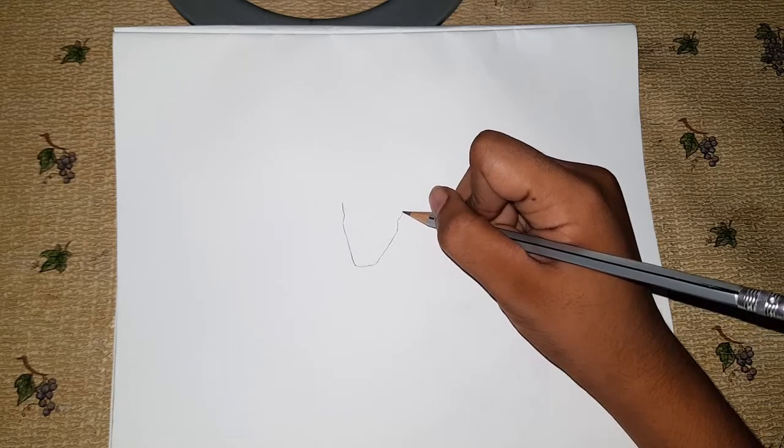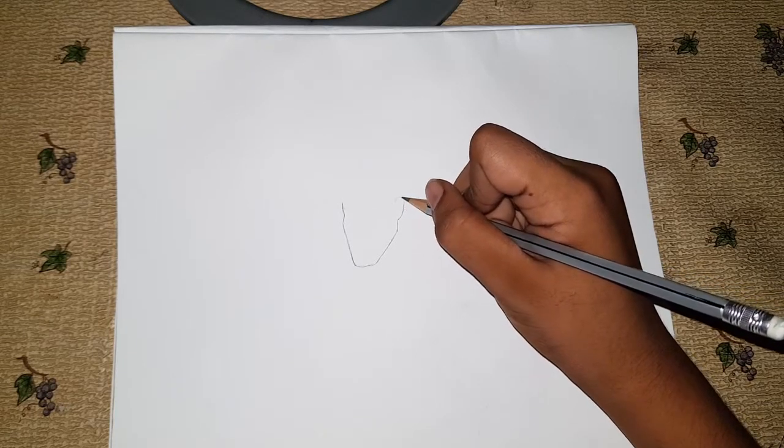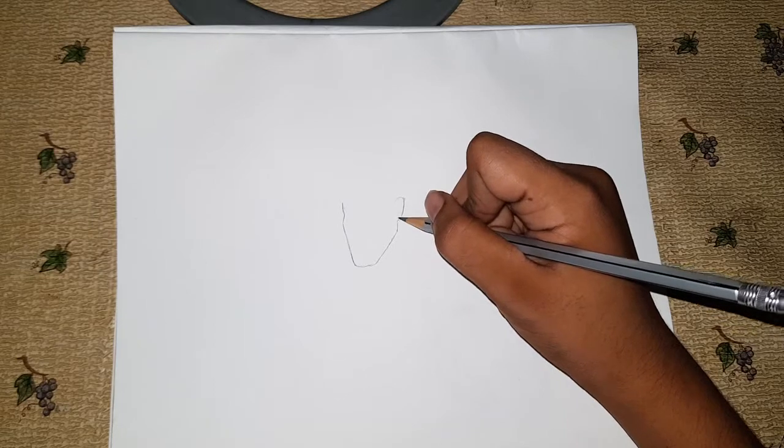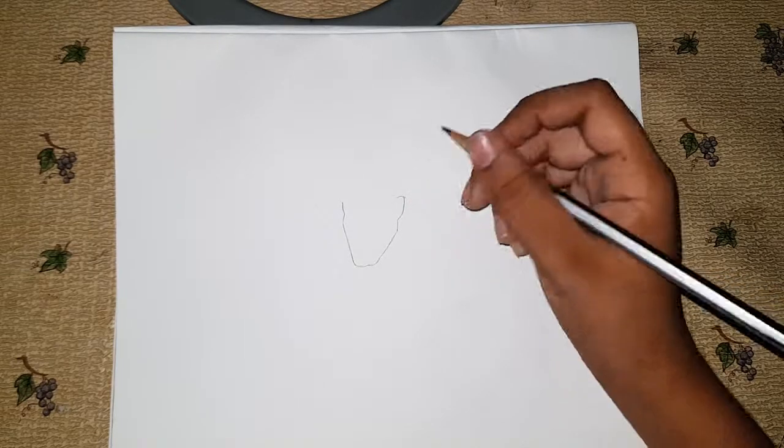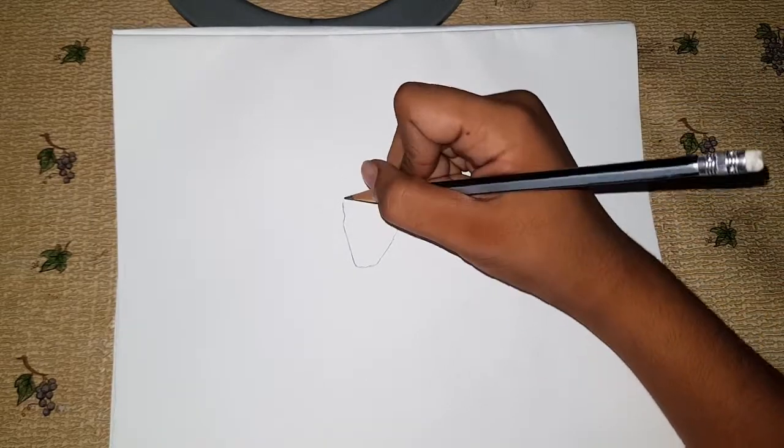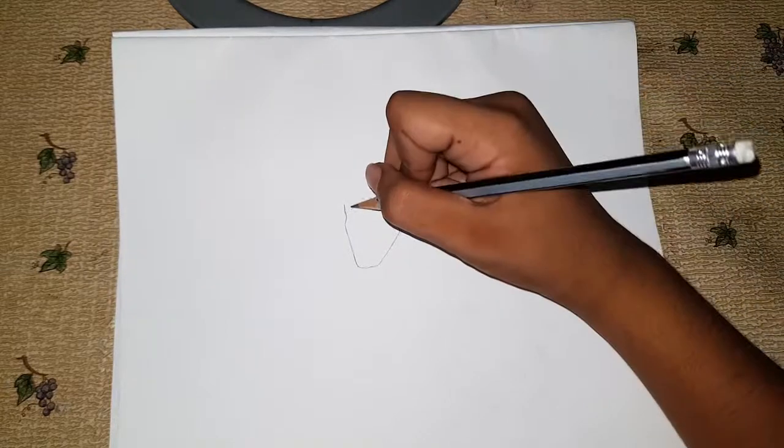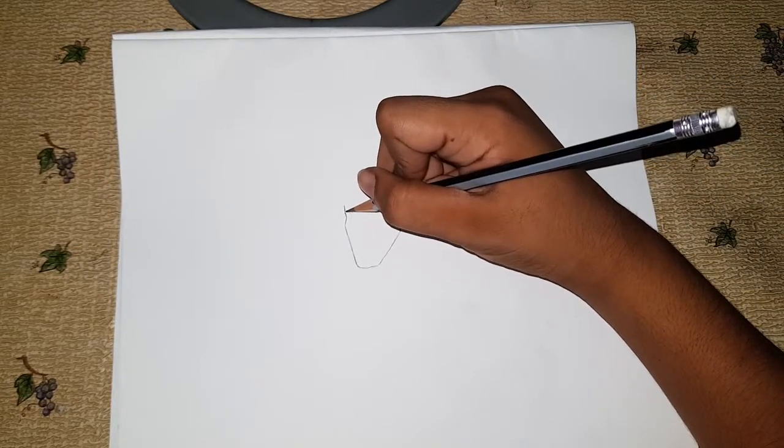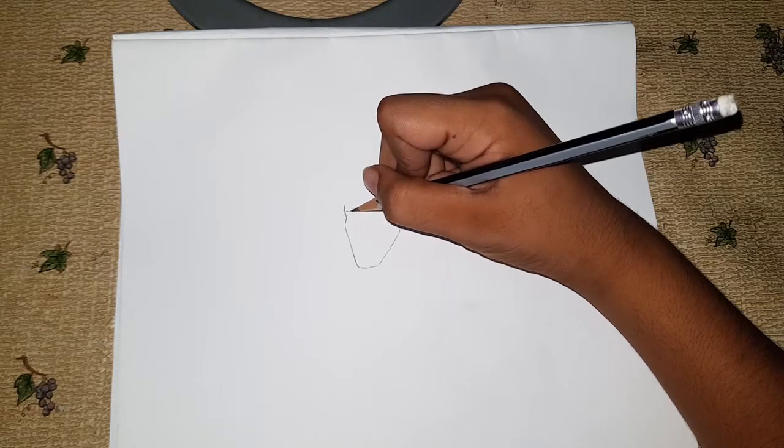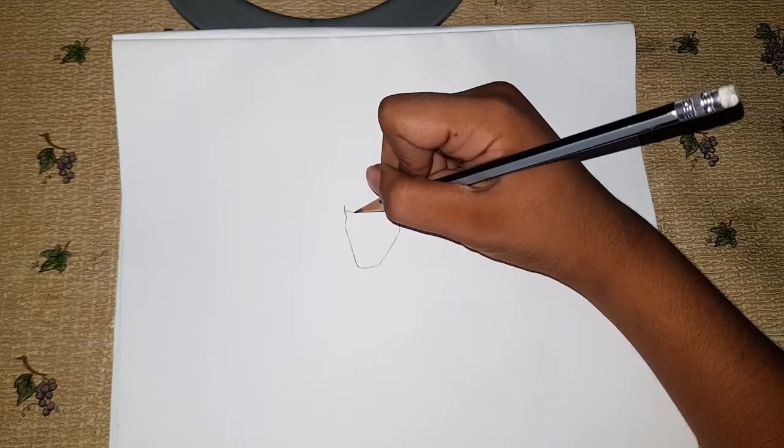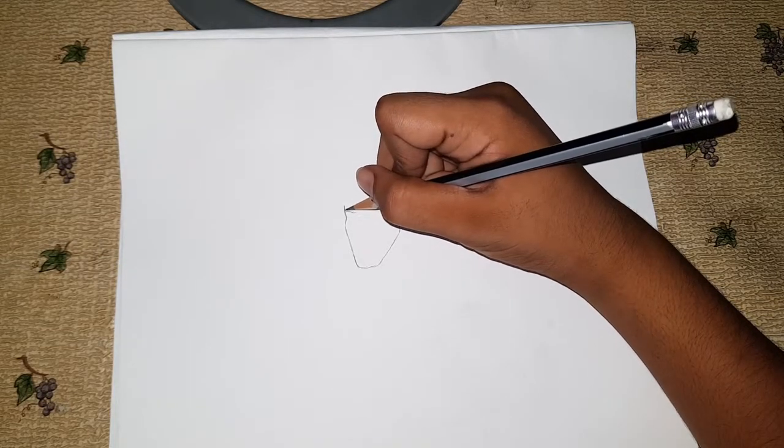This is where his ear's going to be, so curve like that. We'll finish that later. But for now, this is the eyebrow, and it's going to be short because it's looking that way.